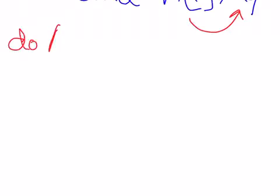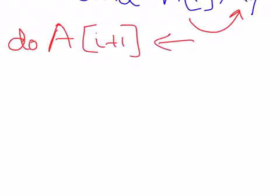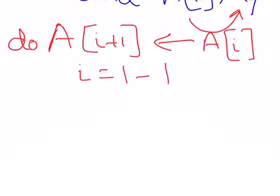There will be a do. And A[i+1] is assigned to A[i]. i equals i minus 1. And so here the swap is simple because I have a copy of the element that I am trying to insert.